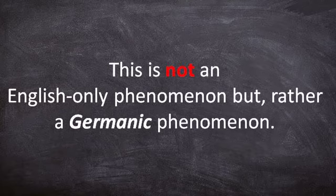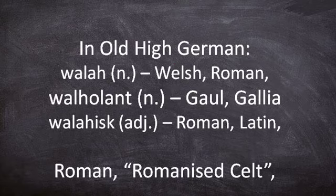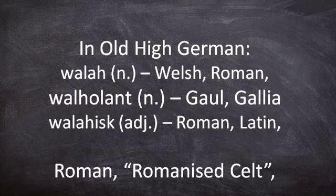We've got to bear in mind the context of these words. This is not an English-only phenomenon, but rather a Germanic phenomenon. In Old High German, we have the term Waelh, which meant Welsh — again hearkening back to the older reference to the Wolkai. Within the context of the Roman Empire, this term also meant Roman, and by extension, Waelhland referred to Gaul. Waelh as an adjectival form meant Roman, Latin — really just Roman-ness. The main thing is really its connection to the Roman Empire.